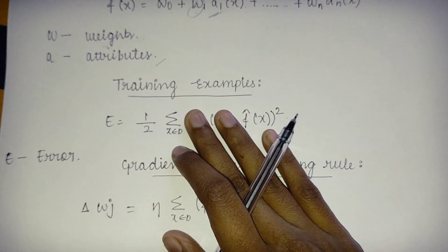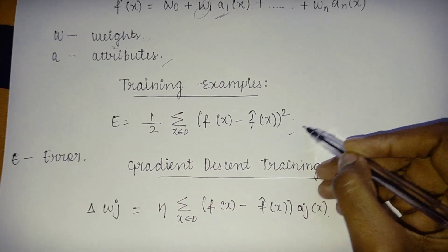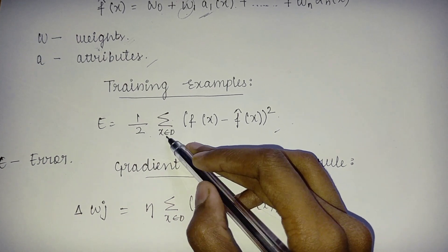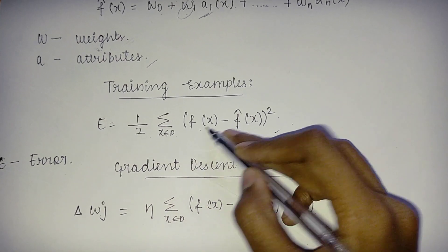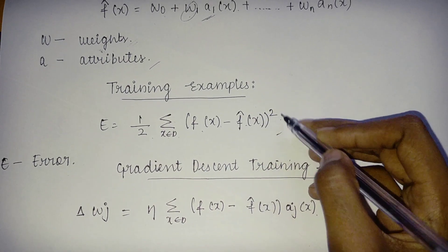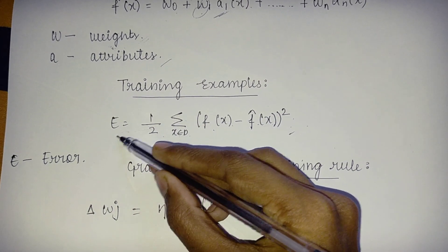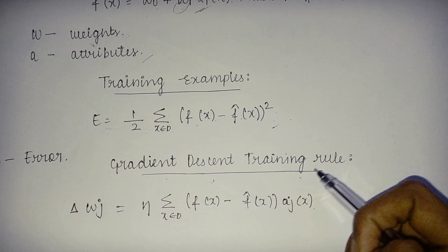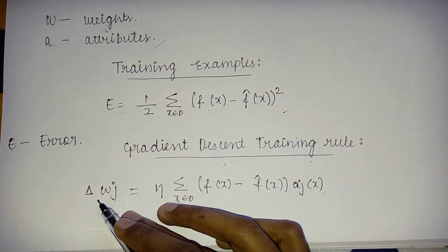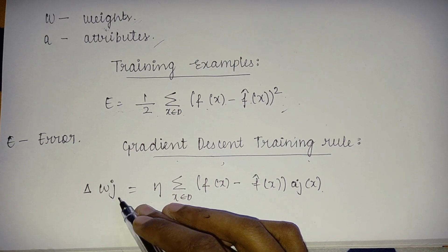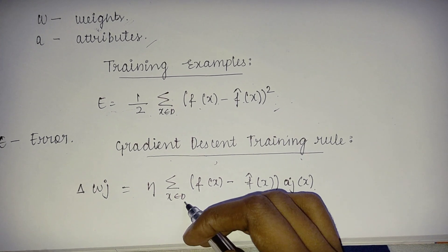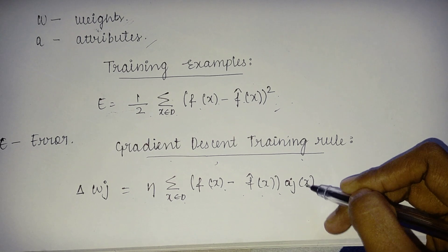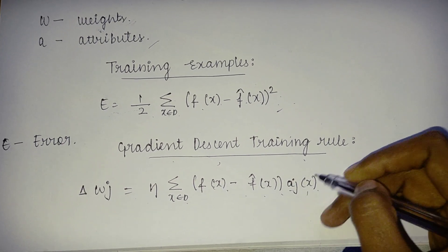The error equation is: E = (1/2) · Σ(x∈D) [f(x) − f̂(x)]², where E is the error. The gradient descent training rule is: Δwj = Σ(x∈D) [f(x) − f̂(x)] · aj(x).